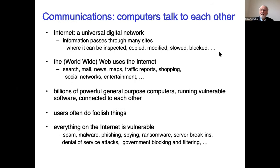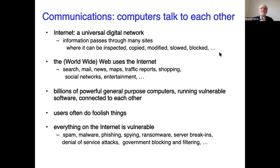How about communications? This is where things get interesting — in the sense of 'may you live in interesting times' — because what we have here are computers talking to each other, sometimes for our benefit and sometimes not at all. The main manifestation of communications that most of us see now is the internet. The internet is a universal digital network. It takes all that information that hardware processes in digital form, that programs manipulate in digital form, and sends it around the world in digital form — typically through many, many different sites. At every place where the information lands, even temporarily, it can be inspected, copied, modified, slowed down, or blocked entirely. Lots of bad things could potentially happen.